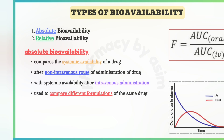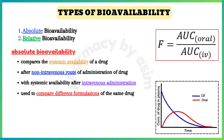There are two primary types of bioavailability. Number one is absolute bioavailability. Absolute bioavailability compares the systemic availability of a drug after a specific non-intravenous route of administration with the systemic availability after intravenous administration, which is considered 100% bioavailability. It's often used to compare different formulations of the same drug to determine if they produce similar effects.